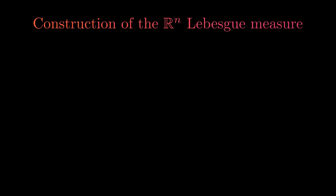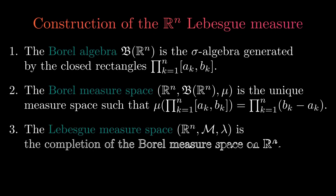With all of this in place, we are ready to construct the Lebesgue measure on regular n-dimensional space. For one dimension, this measure is just the usual length; for two dimensions, it's area; and for three dimensions, it's volume. To construct this measure, we start with the sigma algebra generated by n-dimensional rectangles — this is called the Borel algebra on ℝⁿ. Then we define the Borel measure space by stating that the measure should assign to all n-dimensional rectangles the product of the length of the sides. It can be proven this condition uniquely determines the measure on the entire space. In the third step, we complete the Borel measure space to obtain the Lebesgue measure space.